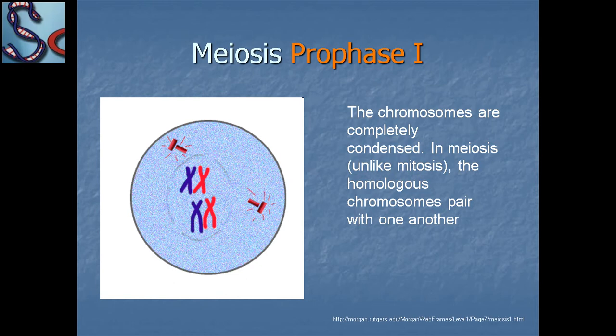In prophase one, the chromosomes are completely condensed. In meiosis, unlike mitosis, the homologous chromosomes pair with one another.